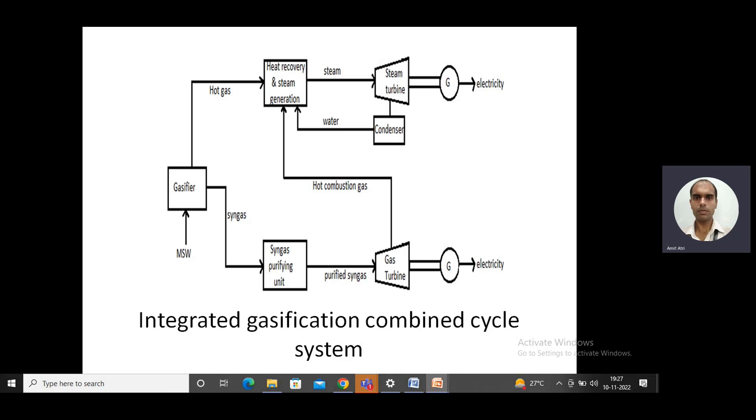Along with that, the output of that gas turbine, the hot combustion gas, is also supplied to the same heat recovery system. So the hot gases coming from the gasifier and hot combustion gases coming from the gas turbine, both of them are utilized in the heat recovery system for production of steam.